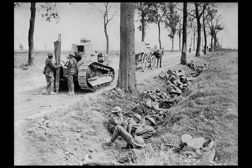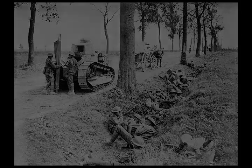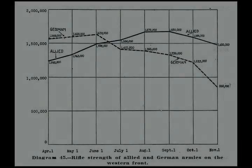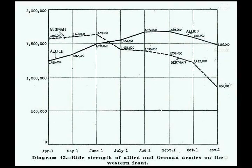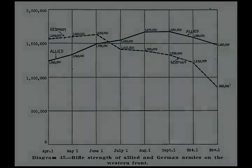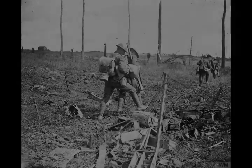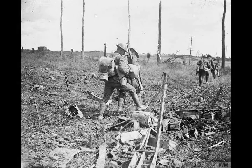The Germans retreated to the Hindenburg Line, but the Allies broke through the line with a series of victories, starting with the Battle of St. Quentin Canal on 29 September. The offensive, together with a revolution breaking out in Germany, led to the armistice of 11 November 1918 which ended the war with an Allied victory.